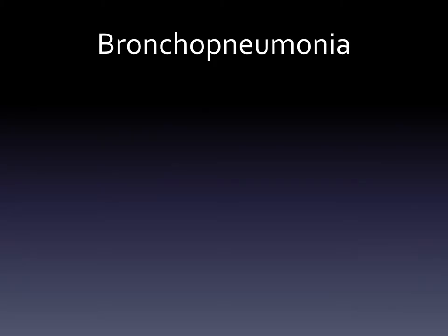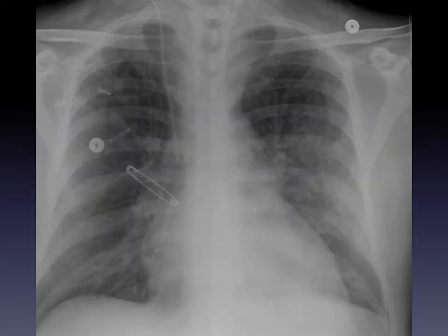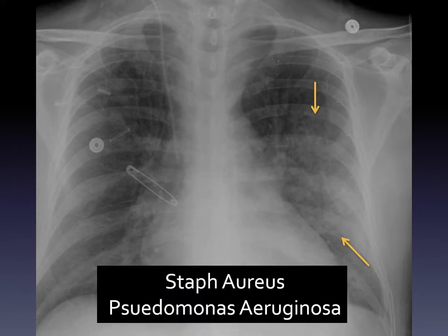Bronchopneumonia is probably a bit more common. This is an infection that involves the airways — the tubes that take air out to the lung — and the distal lung. It's not as dense, and it also doesn't stay only in one lobe; it can sometimes spread to other lobes. Here you see nodules and some of the airways involved. Certain infections tend to cause this type of bronchopneumonia, like Staph aureus or Pseudomonas, but there are many.